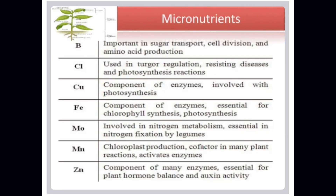Role of micronutrients: Boron is important in sugar transport, cell division, and amino acid production. Chlorine is used in turgor regulation, osmotic diffusion, and photosynthesis reactions. Copper is a component of enzymes involved with photosynthesis. Iron is a component of enzymes, essential for chlorophyll synthesis and photosynthesis. Molybdenum is involved in nitrogen metabolism and essential in nitrogen fixation by legumes. Manganese assists in chloroplast production and acts as a co-factor in many plant reactions, activating enzymes. Zinc is a component of many enzymes, essential for plant hormone balance and enzyme activity.